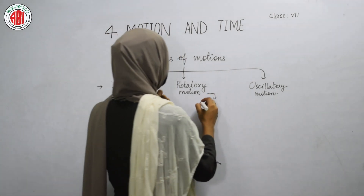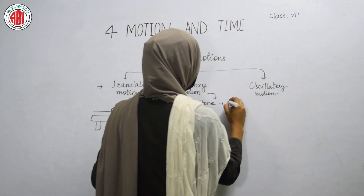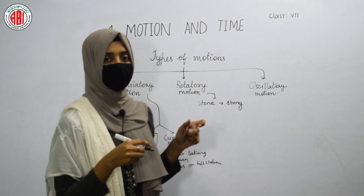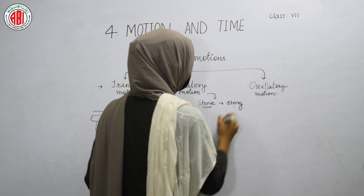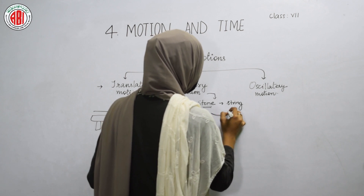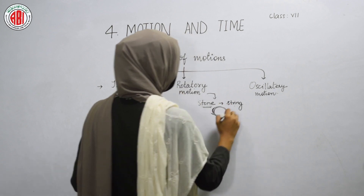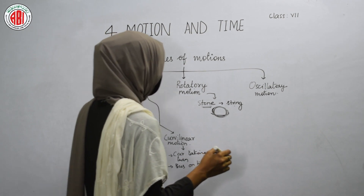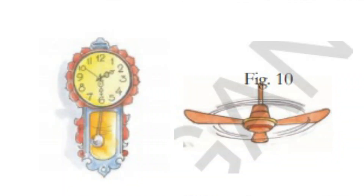Here we are going to take a stone, tie that stone with a thread or with a string. Now hold the string with your thumb and forefinger and swing the string. When you swing the string, the stone attached to the end of the string also moves — horizontally as well as vertically — and after some time it moves in a circular path. This circular motion of the stone is called rotatory motion. Examples include the hands of a clock and the blades of a ceiling fan.